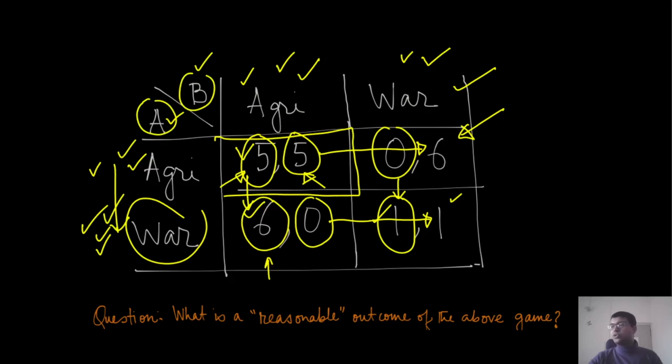You can think of this action profile—war comma war, both these players choosing war—as some sort of a reasonable outcome, which we can call something like an equilibrium. Nobody has any reason to deviate from it, because the moment it deviates it is going to get less payoff. It's clear that both these players will actually go to war. The irony is that even though they could have collectively got a better payoff by choosing agriculture, the personal greed of increasing their payoff might actually lead to a situation where both are choosing an outcome which is worse for both of them.